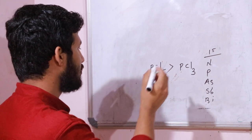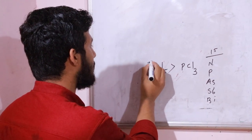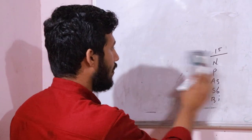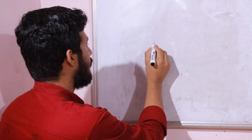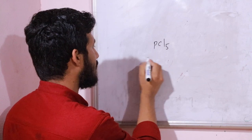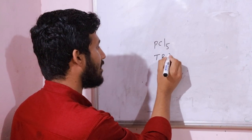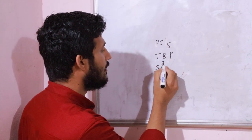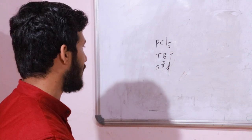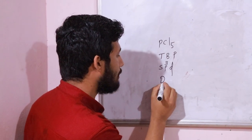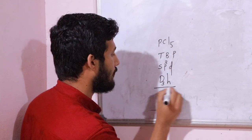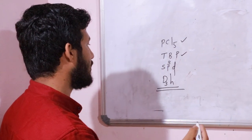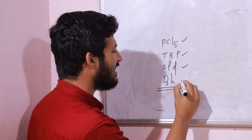In phosphorus pentachloride, phosphorus is in the +5 oxidation state, and in phosphorus trichloride, phosphorus is in the +3 oxidation state. The phosphorus pentachloride molecule has a trigonal bipyramidal shape, with sp3d hybridization and a D3h point group.